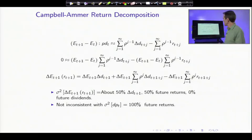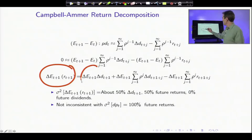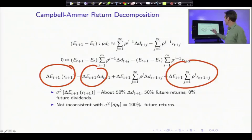Here it turns out that the variance of unexpected returns is about 50% variance of contemporaneous dividends, 50% discount rates, and absolutely nothing due to expected future dividend growth.